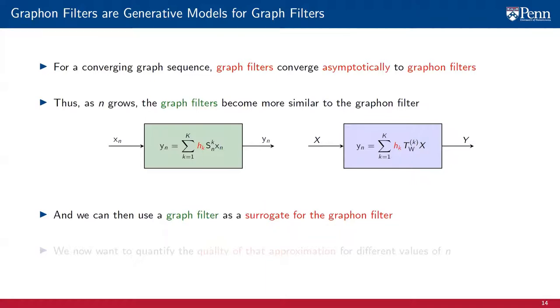That's precisely what we discuss in this lecture. We present conditions under which graph filters can approximate graphon filters, and we also quantify how good that approximation is for different values of n.